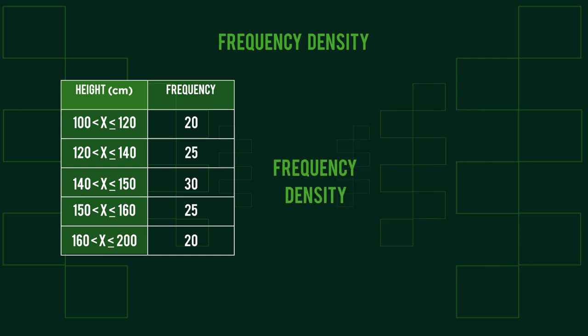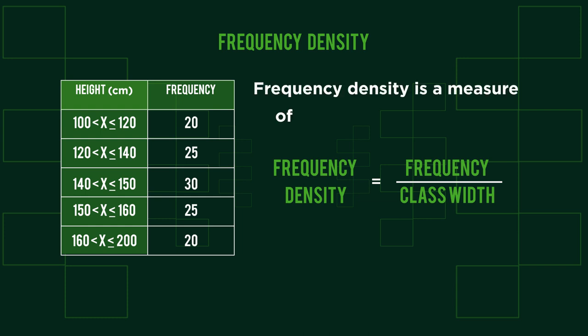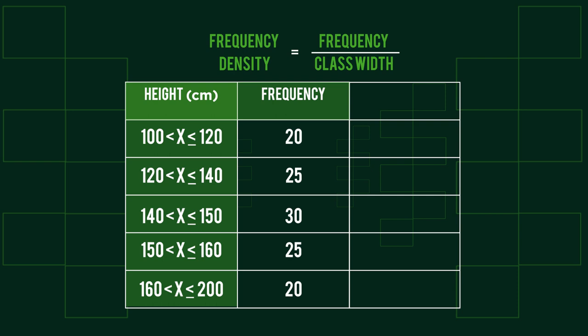We calculate frequency density by dividing the frequency of each group by the size of the group. As density is a measure of how much mass there is in a volume, frequency density is a measure of frequency in a set space. This allows us to solve the problem with unfair comparisons as all values plotted will have their group size accounted for. We start by adding an additional column titled frequency density. We then divide each frequency value by its corresponding class width to find the frequency density. Pause the video and see if you can work out the frequency density for these values.